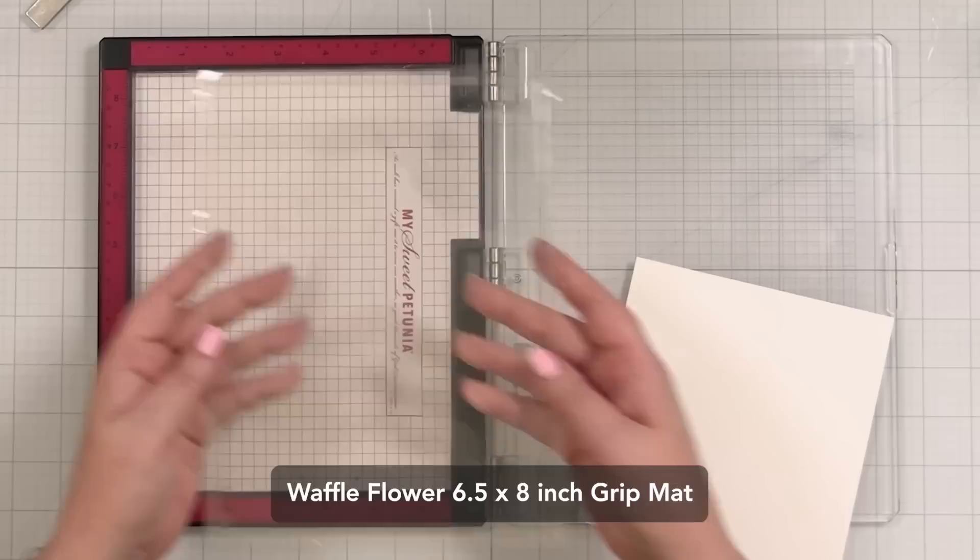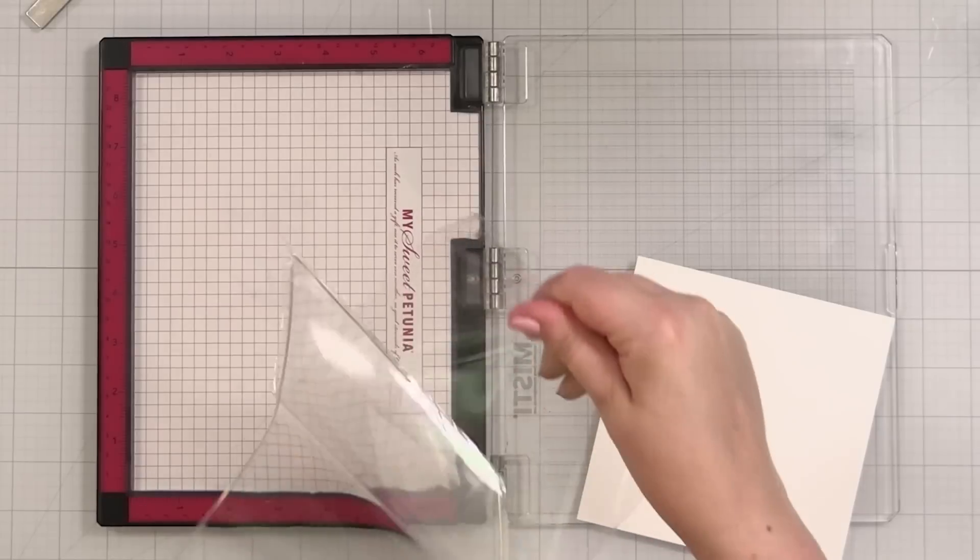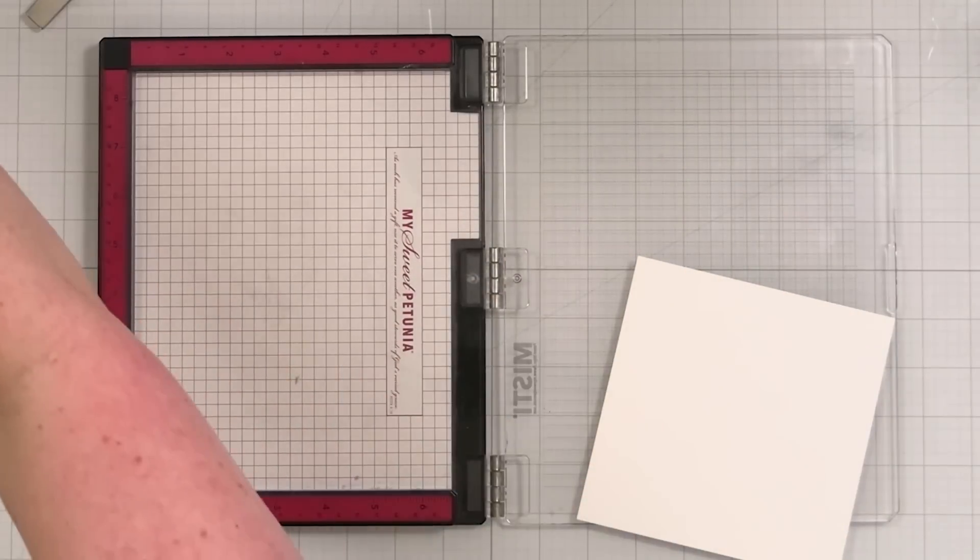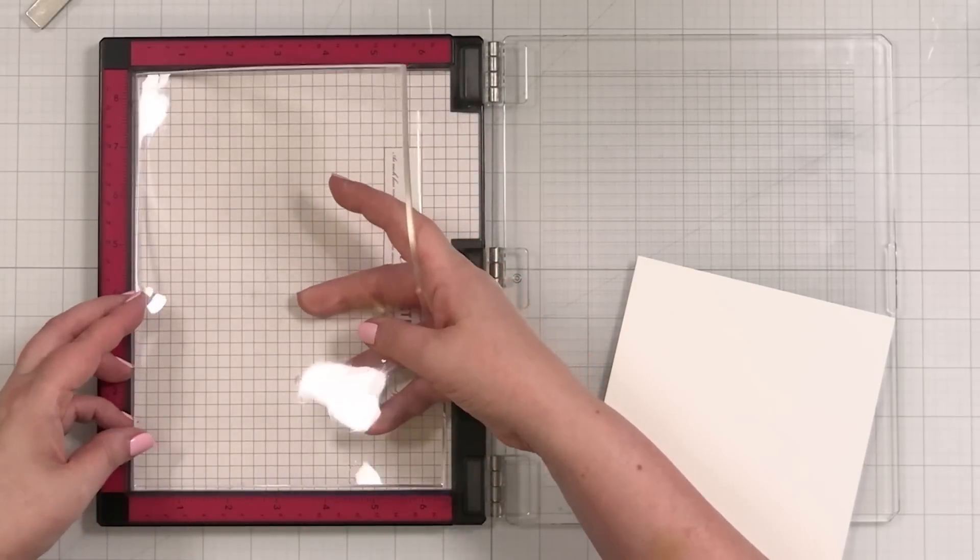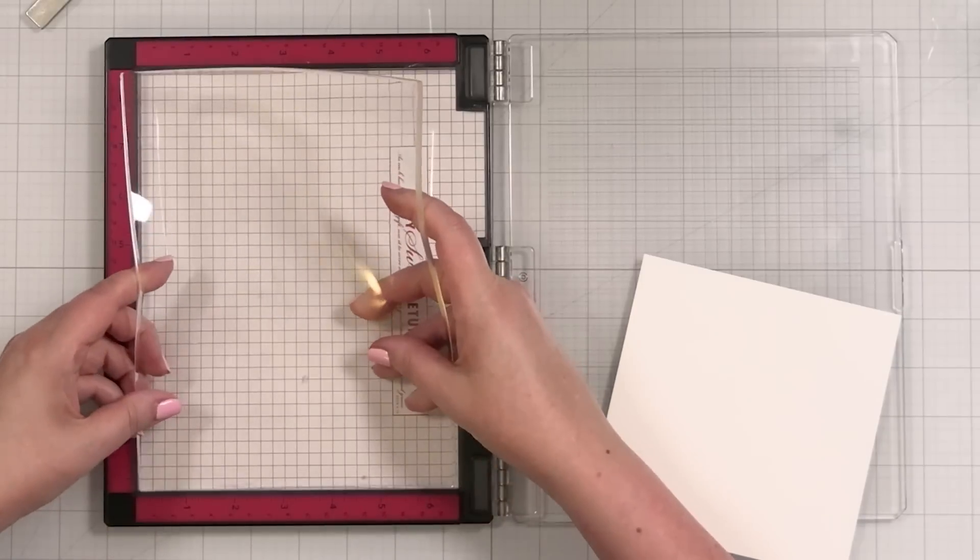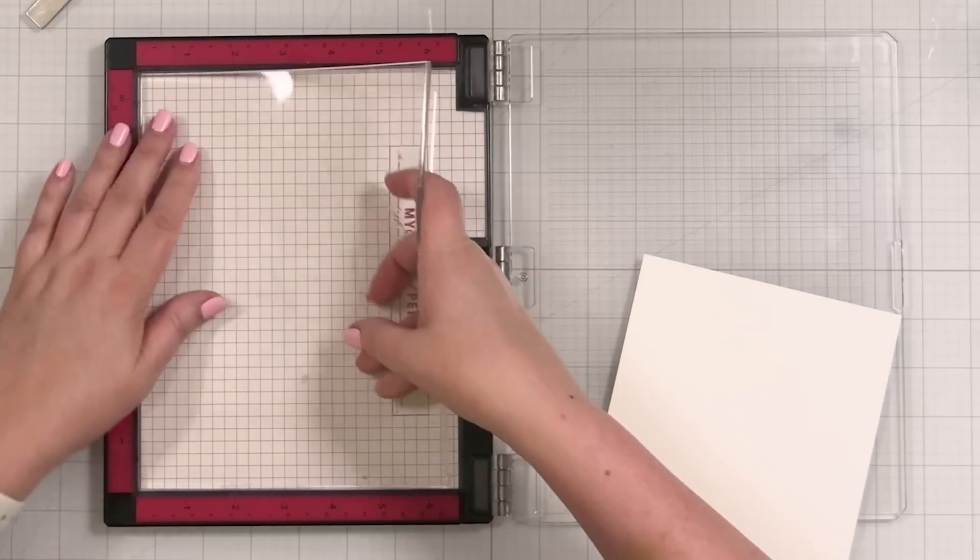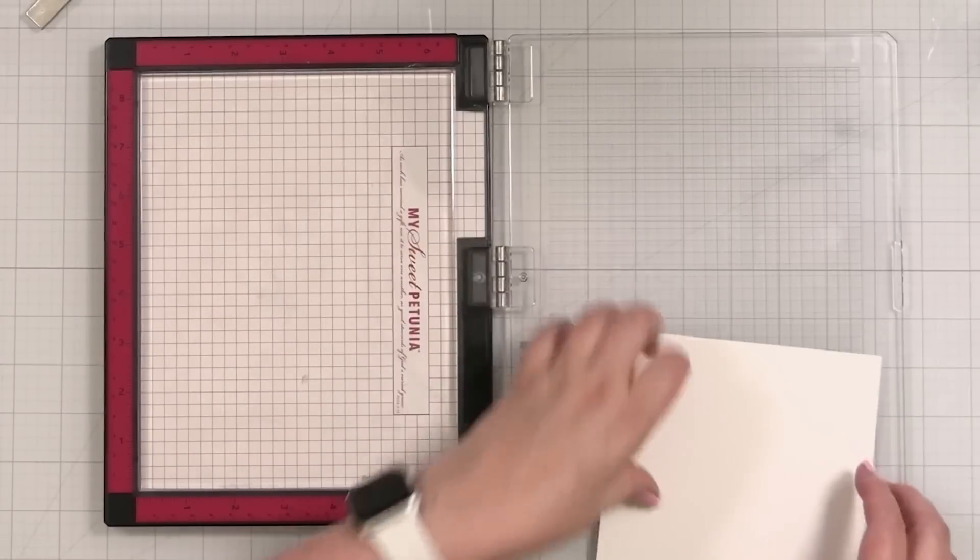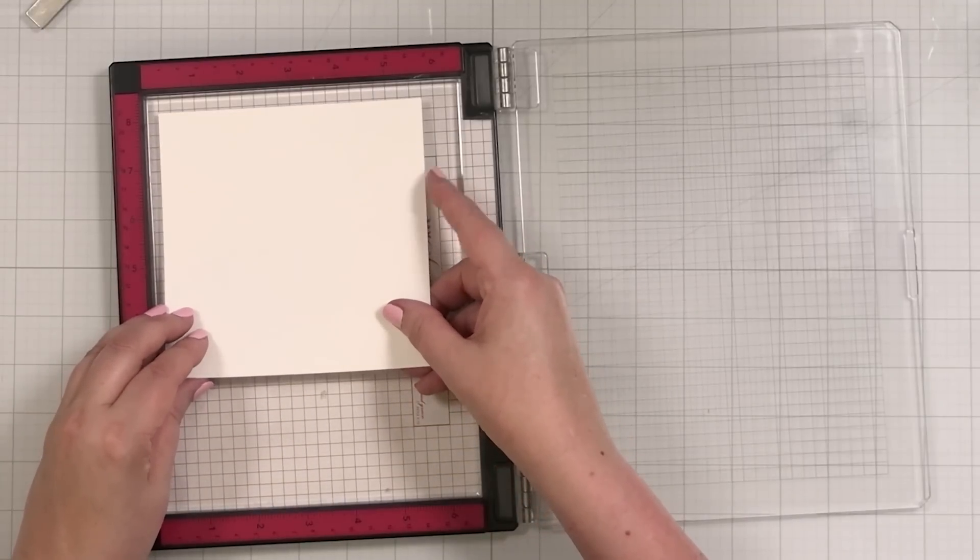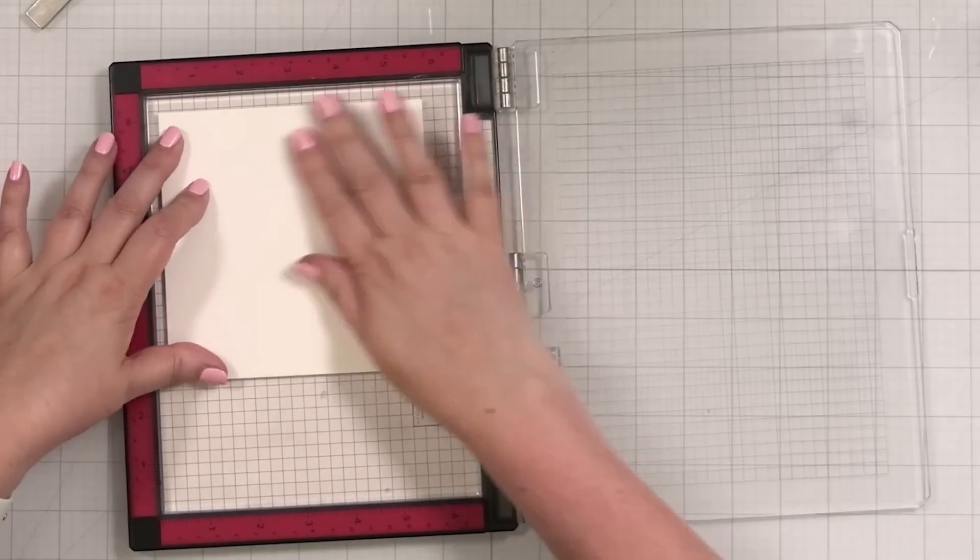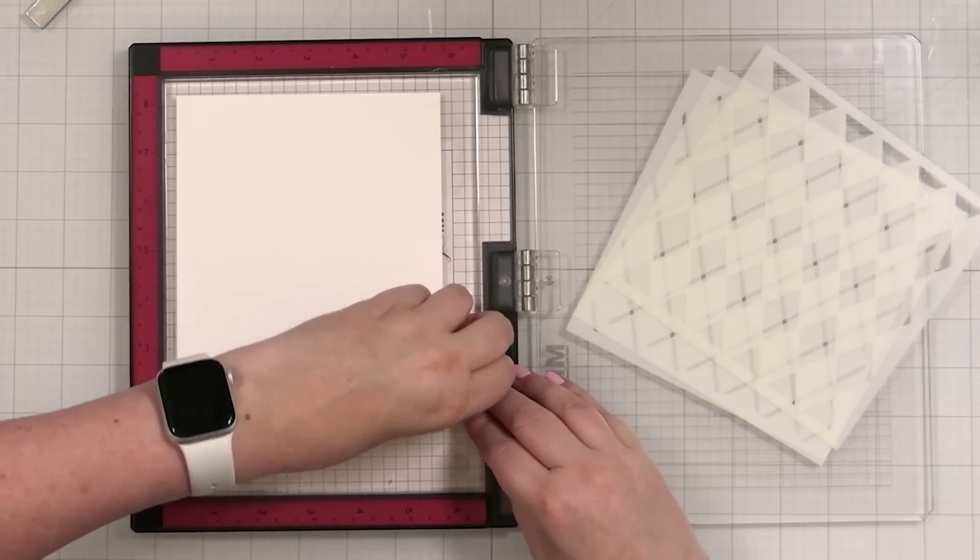Let me get set up first to create my ink blended panel from which I will create my shaker window. I took my Misti pad out because I have the grip mat that is sized for this. I'm going to do my stenciling on this because this is going to hold everything in place so nicely. Let me get my grip mat in place. It's brand new and it is sized to fit right inside the Misti.